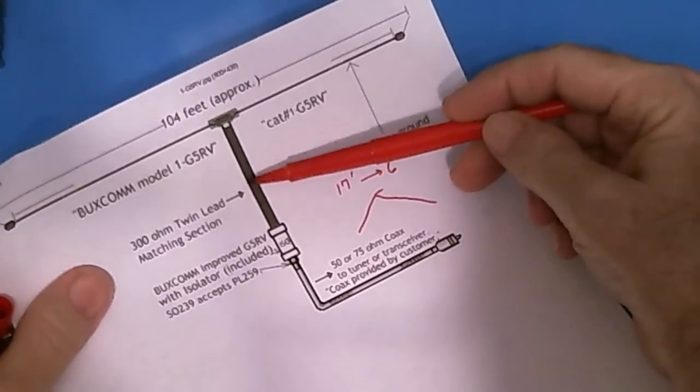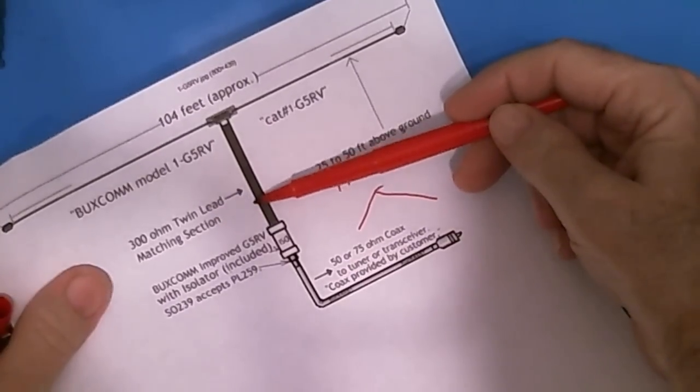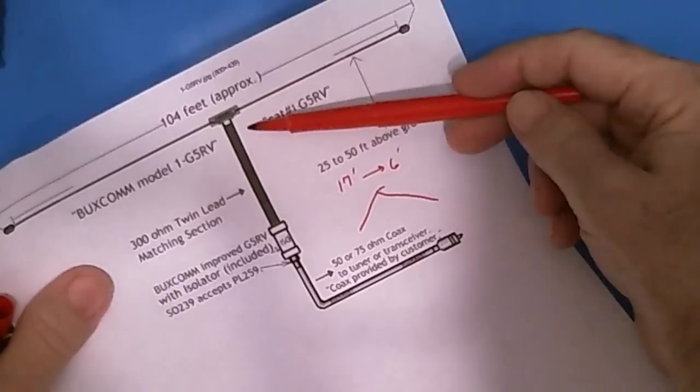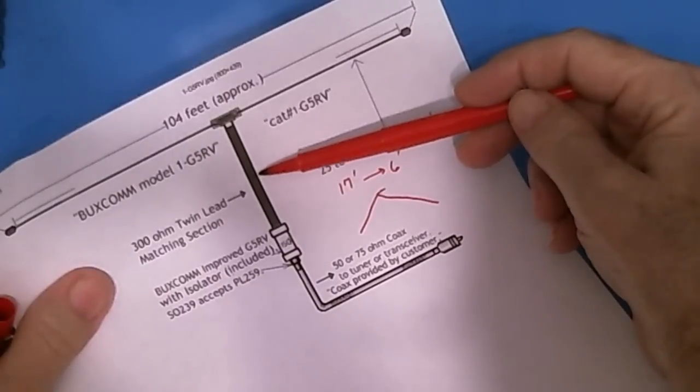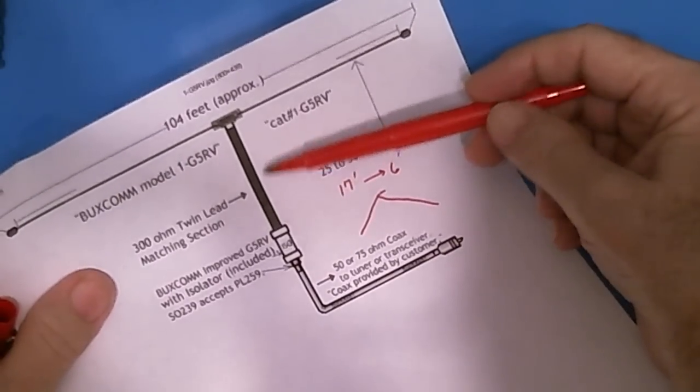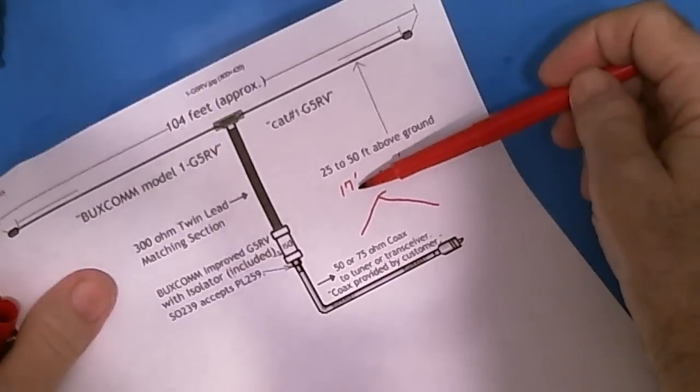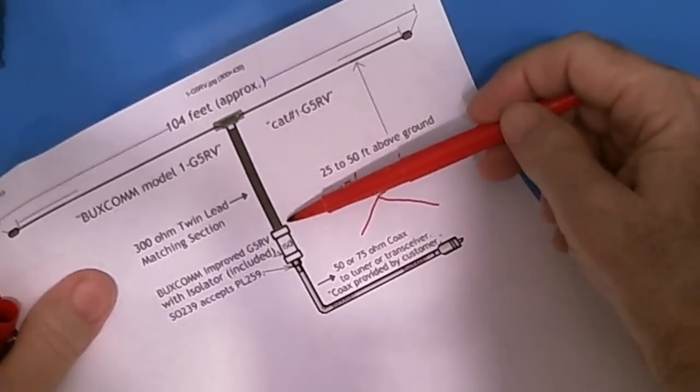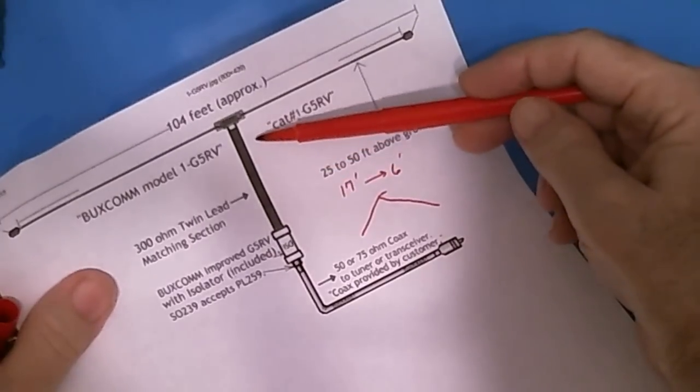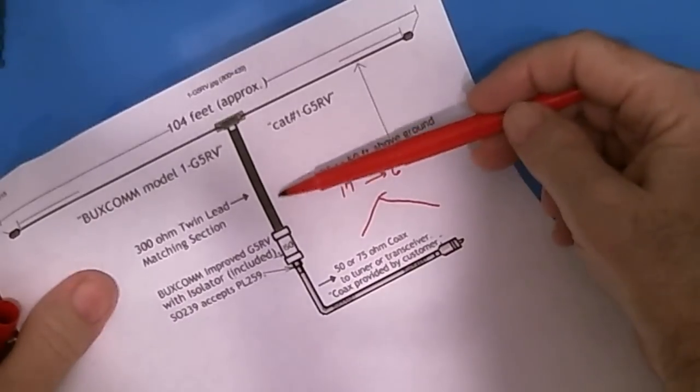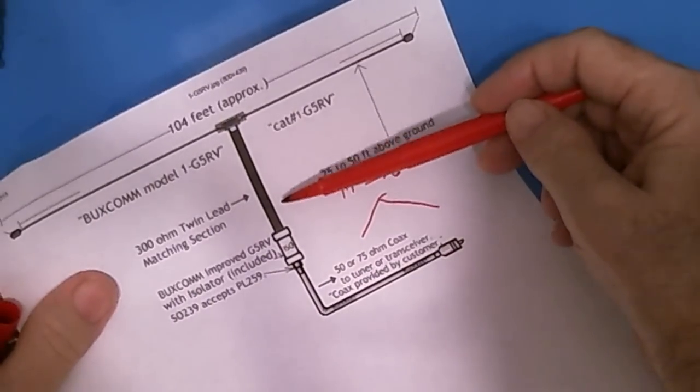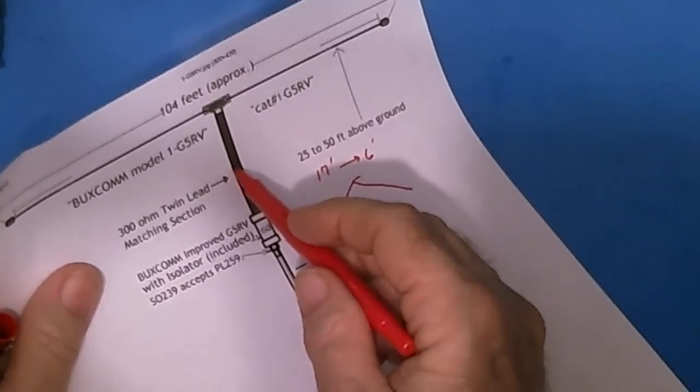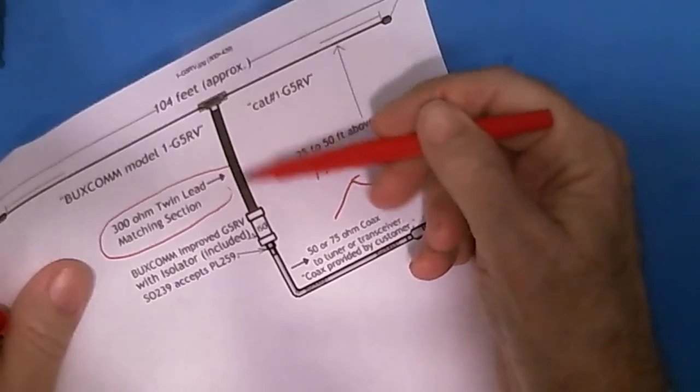The next problem is it has this 300 ohm twin lead cable here that goes down to the balun. This is, I can't remember exactly, but I think this is about 25 to 30 feet. And since I only have 17 feet up in the air maximum, this actually ends up laying on my second story roof. So it's not coiled up, but it's laying on that second story roof which is at about 10 feet. So this is another problem I've got. This should be stretched out to its full length, and it's not.